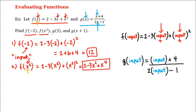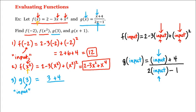Alright, what about this third one, g of 3? Now we'll start working with our function g. So 3 is going to be our input, which means we're going to plug it in here and here. That is, this is equal to the input, which is 3, plus 4, divided by 2 times 3, minus 1, which is equal to 7 divided by 6 minus 1, which is 5, which would be our answer to the third part.